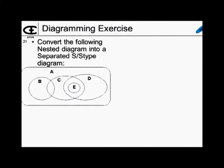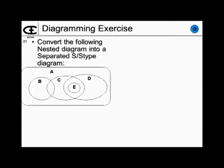Now it's time for you to do some work. I want you to convert the nested diagram into a separated subtype-supertype diagram. Pull out a piece of paper and sketch it out. Think about ORM modeling: the first thing we do is identify nouns, which are going to be the objects — so we can draw five circles right off the bat for the five populations, then worry about how they're related and the placement.